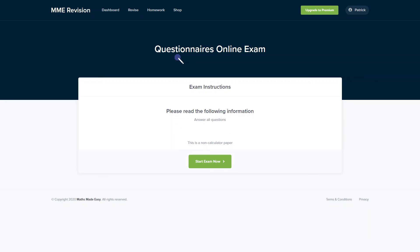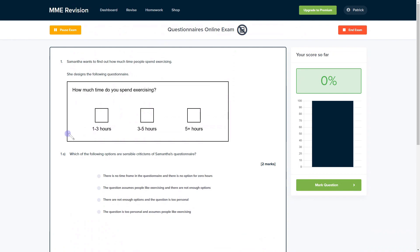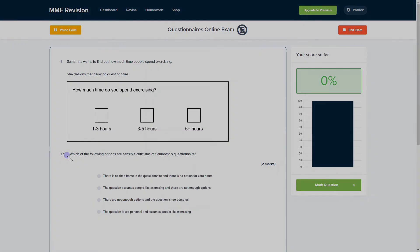If you'd like to get some practice with some questionnaires exam style questions, you can do so with our online exam. It's available through our revision platform. And if you take the test, you'll find a variety of different questions, loads of different question types as well, and you get instant feedback on everything. So if you're interested and you want to take the test, then you can click the link below. It will take you straight there.